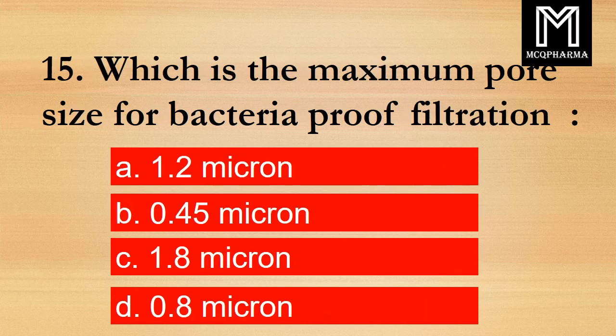Question number 15. Which is the maximum pore size for bacteria-proof filtration? Option A: 1.2 micron. B: 0.45 micron. C: 1.8 micron. D: 0.8 micron. Correct answer: Option B, 0.45 micron.